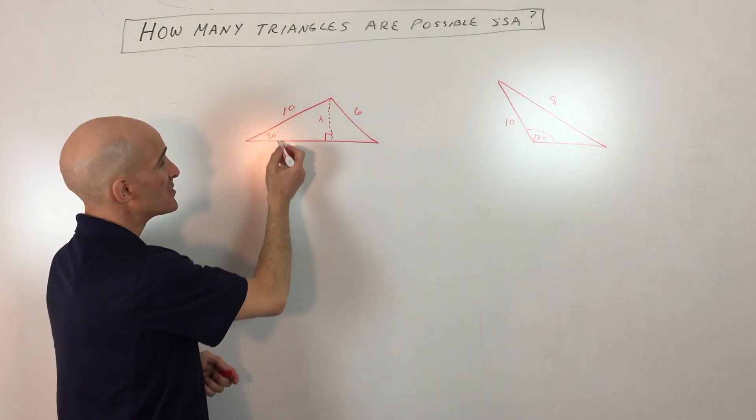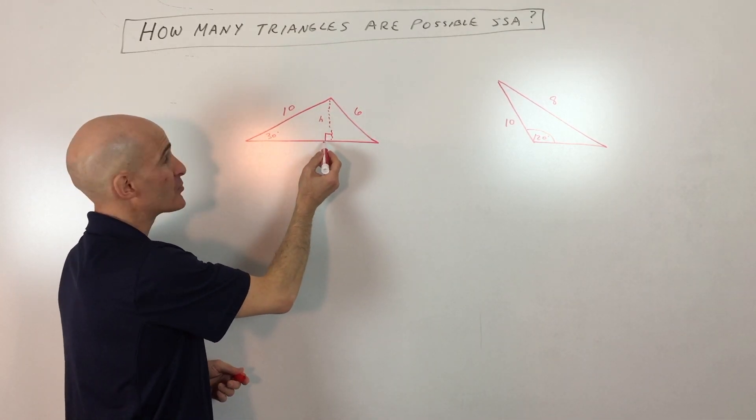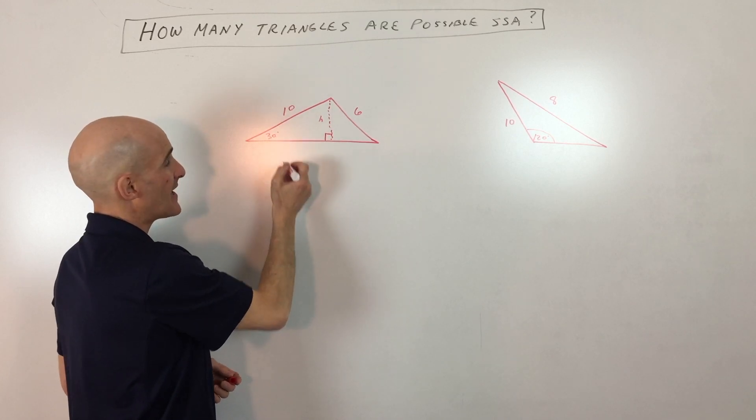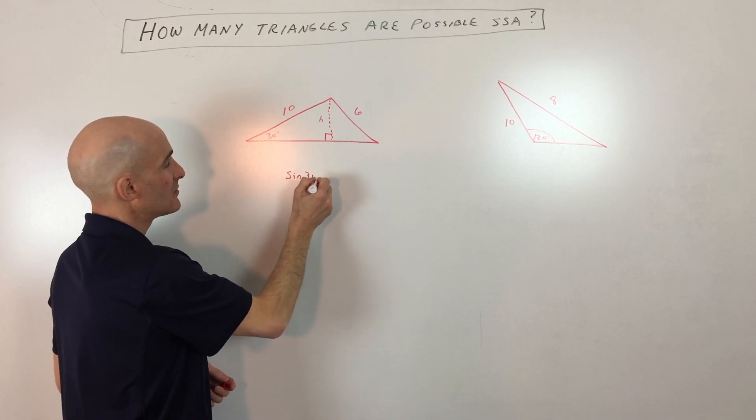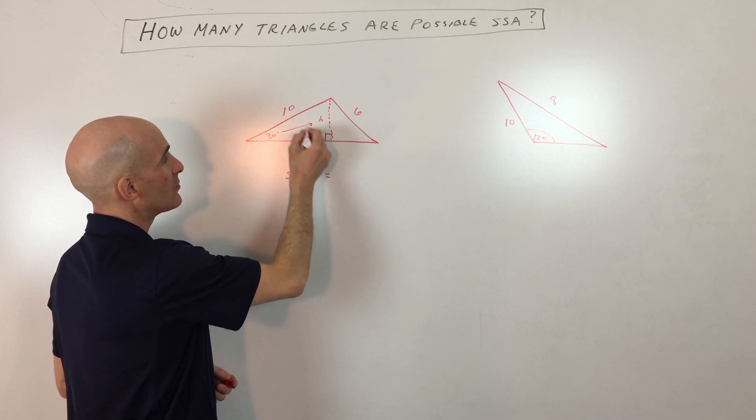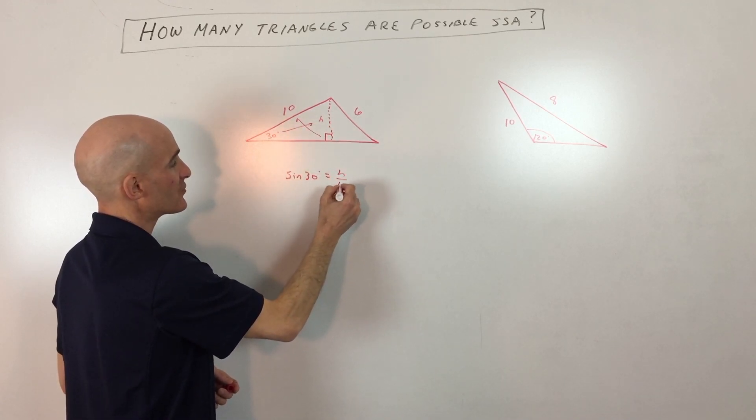Now, the way you would do that is just like in right triangle trigonometry, SOHCAHTOA. You would say sine of 30 degrees equals the opposite side over the hypotenuse, so H over 10.